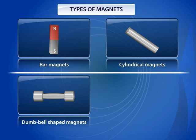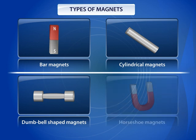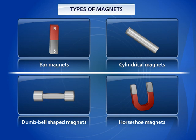Horseshoe Magnets: In these magnets, the poles are located at the two free ends of the U-shape.